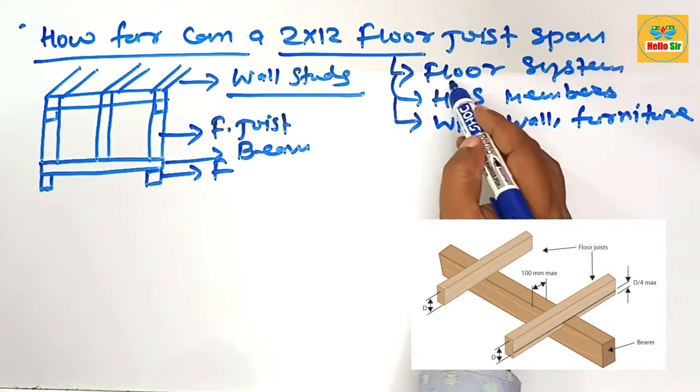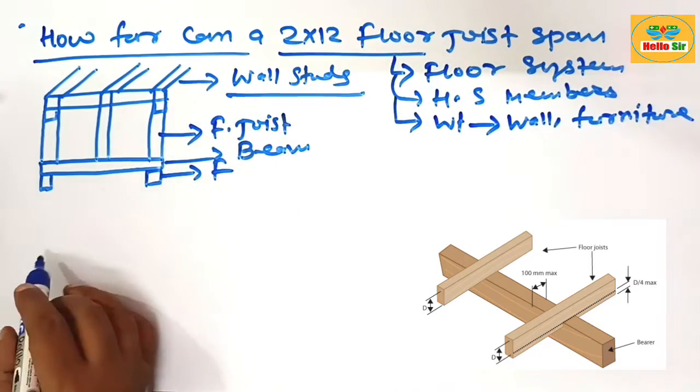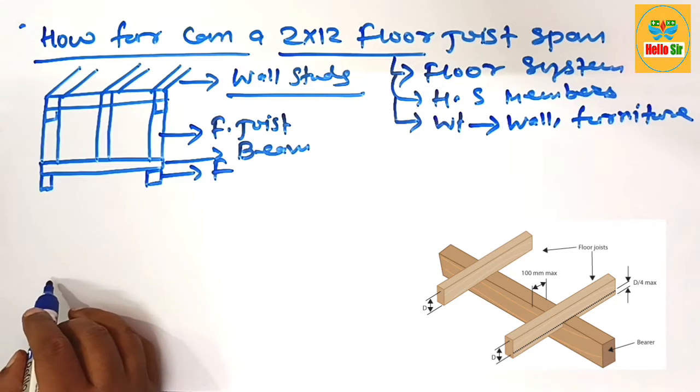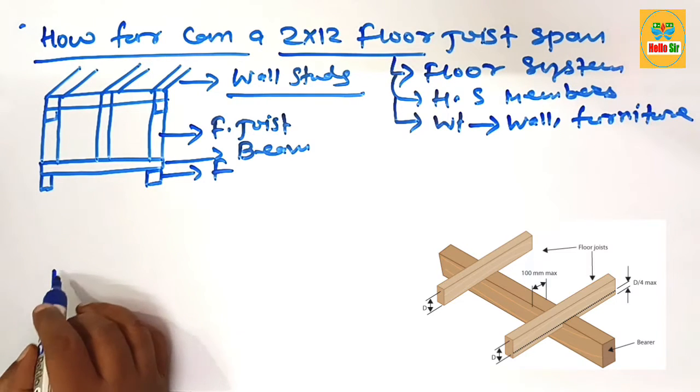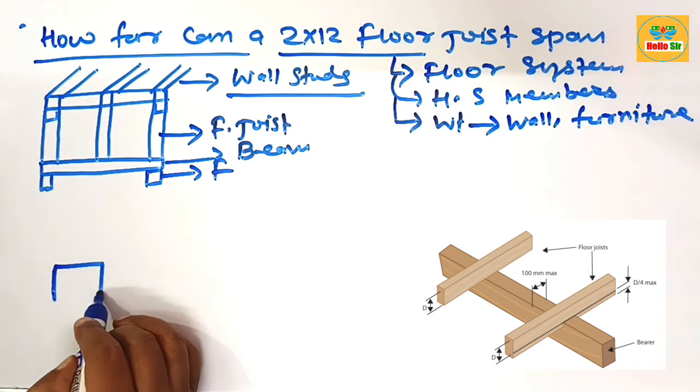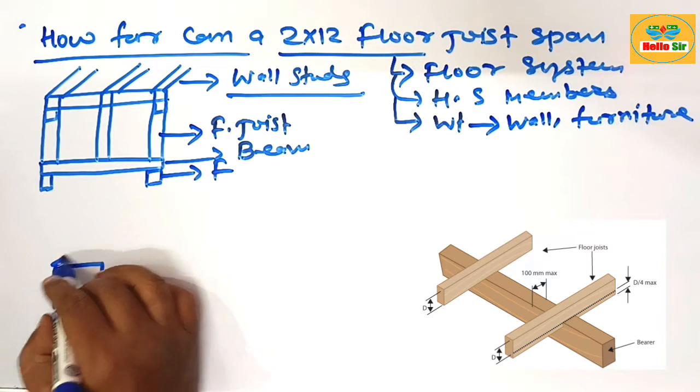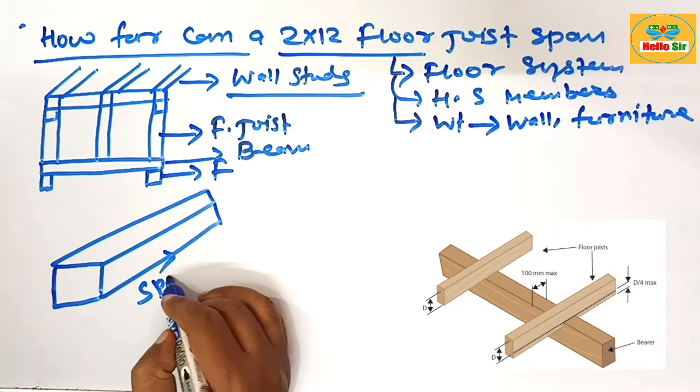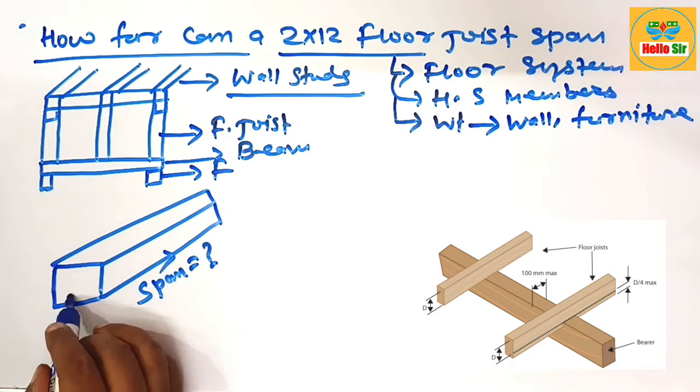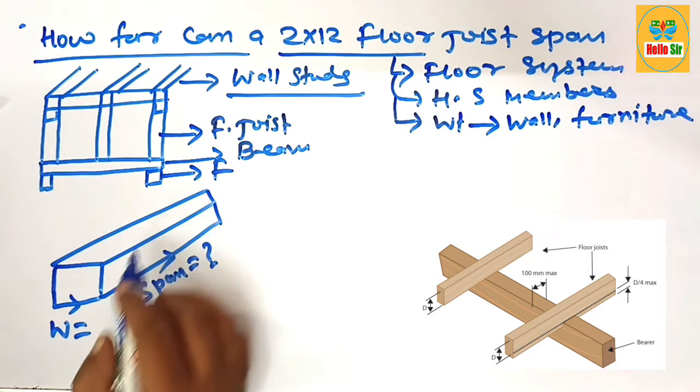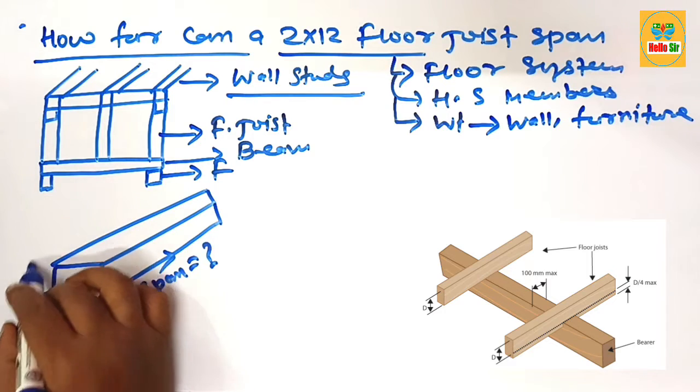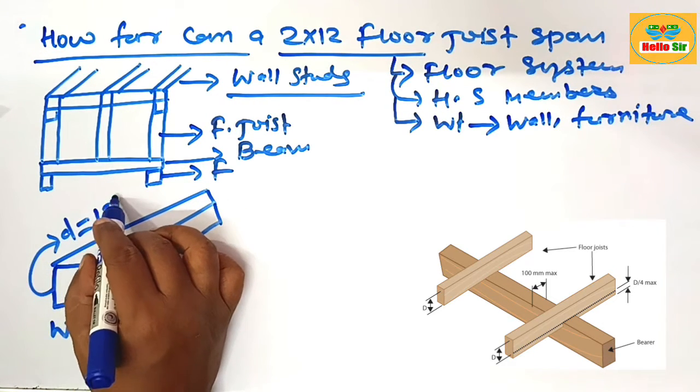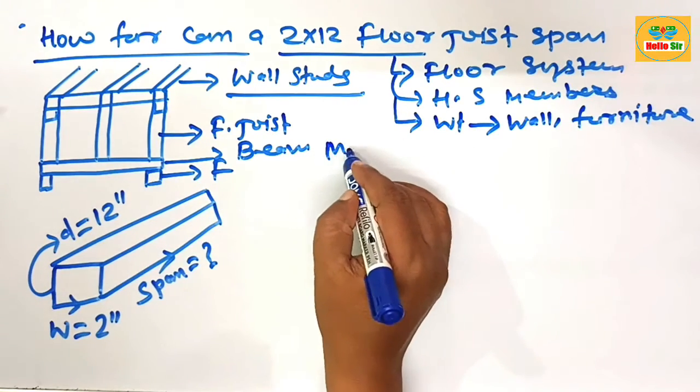This is a rough diagram to understand the floor system. Here you have the dimensions for the floor joist. This will be the span you have to find out. This is the width section which is about 2 inches, and this is the depth section which is about 12 inches.